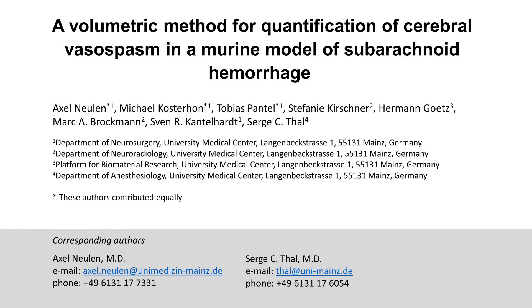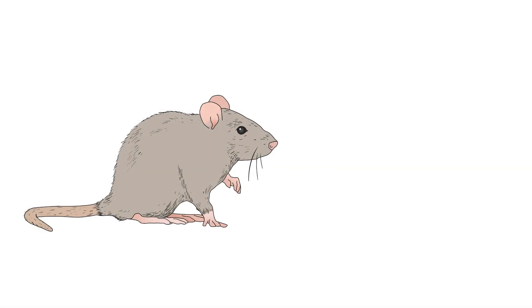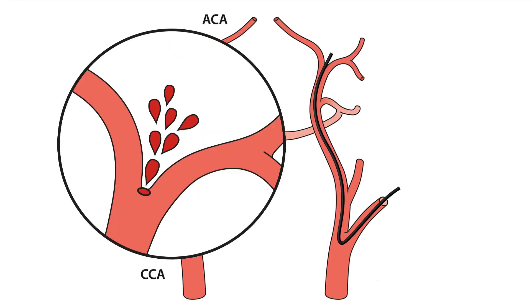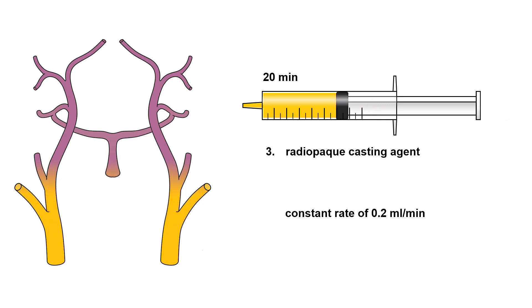The overall goal of this procedure is to quantify cerebral vasospasm in mice after induction of subarachnoid hemorrhage. This is accomplished by subjecting the animal to transcardiac perfusion and endovascular casting using a radiopaque casting agent.